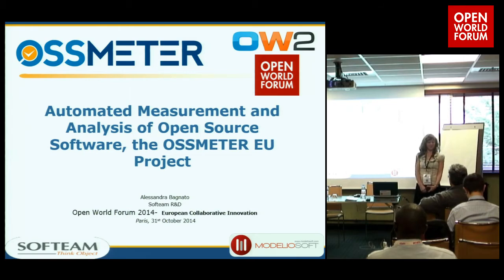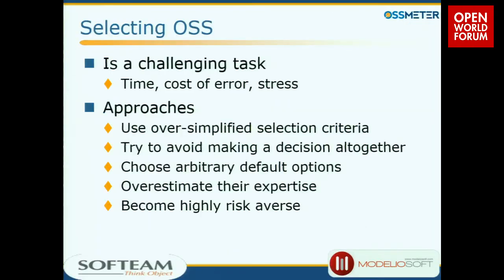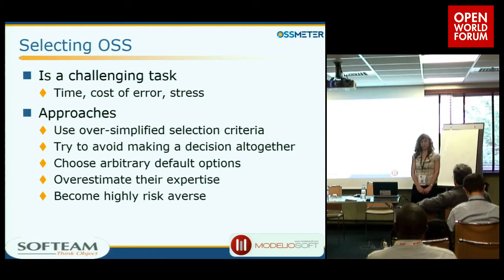OSMETER is an FP7 project funded by the European Commission to improve the state of the art in the automatic measurement of open source software. We are very happy to be here today to let you know what we have done in these two years of work, as the second year of the project is going to finish this month.